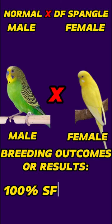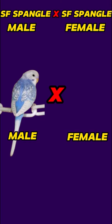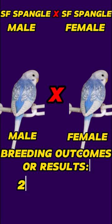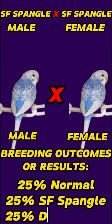Third pairing: the male is a single-factor spangle budgie and the female is a single-factor spangle budgie. The breeding outcomes or results are 25% chicks are normal, 25% chicks are single-factor spangle, and 25% are double-factor spangle budgies.